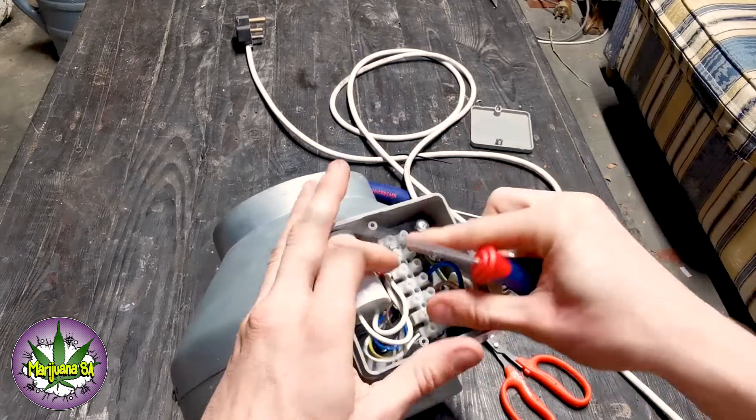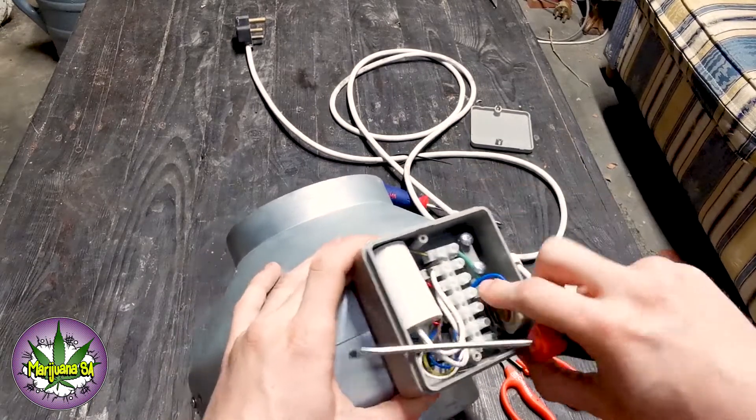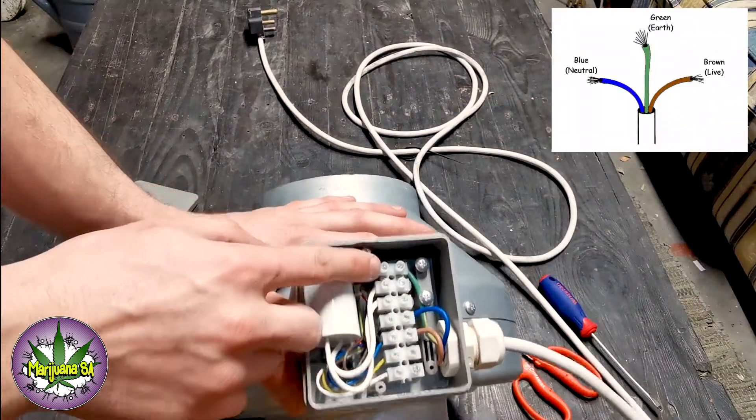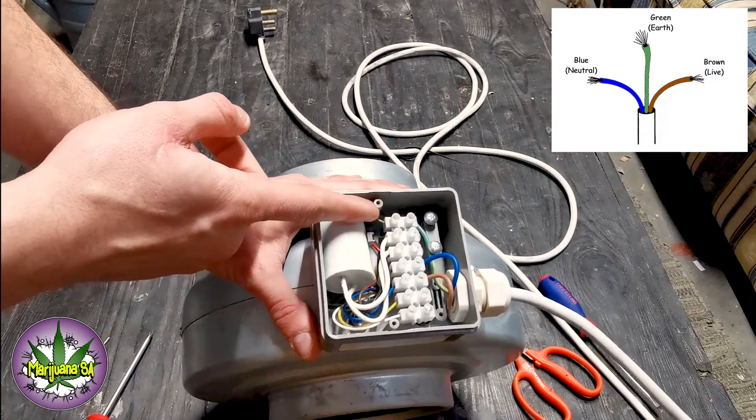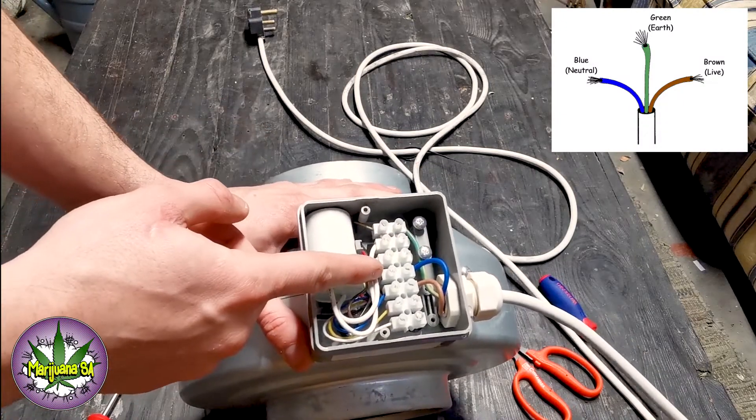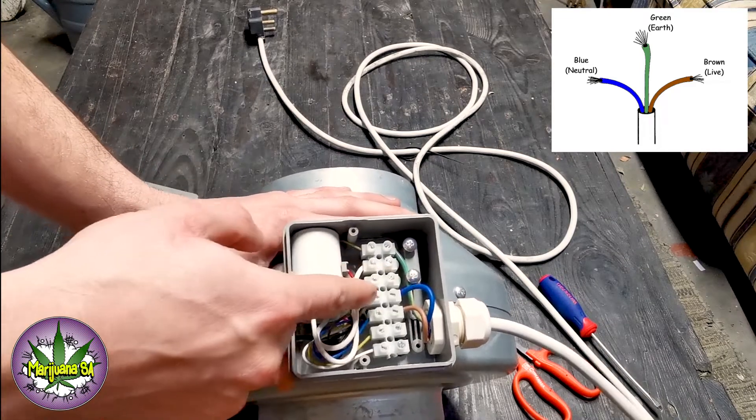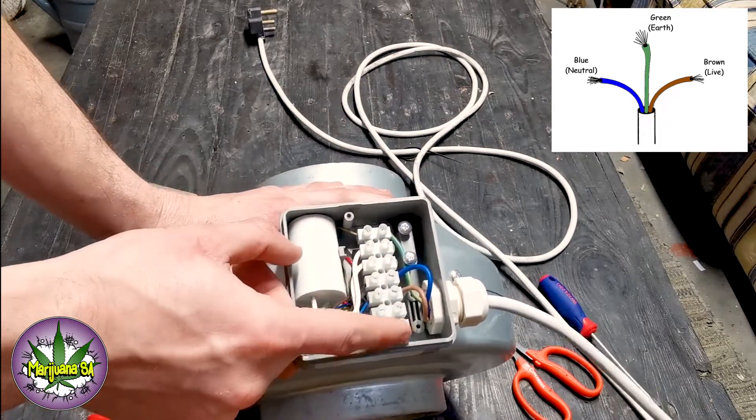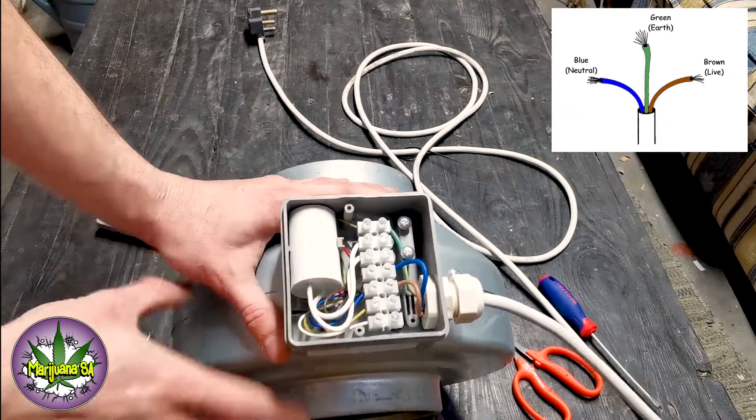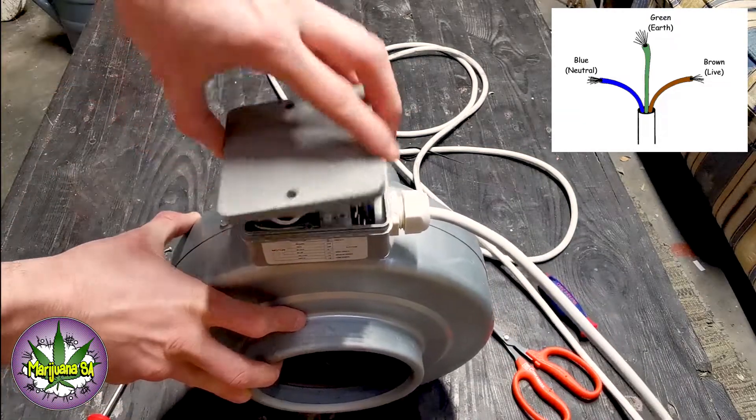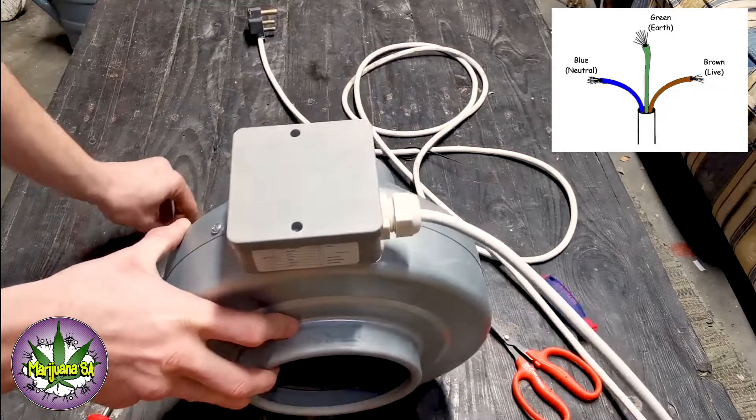So in closing we wired our yellow to the top, this is our earth, the blue which is our neutral to the black wire, and then we selected our speed. I went for the fastest speed and wired my live here and then closed the unit back up again as opened, ready for action. Thanks for watching guys, I hope you enjoyed the video. If you did please like and subscribe and till next time, peace out.